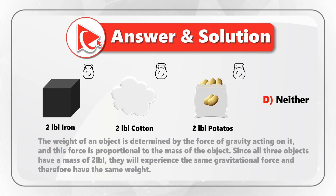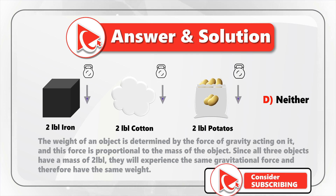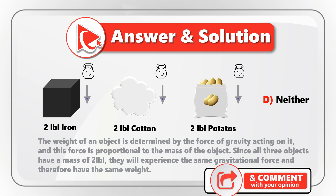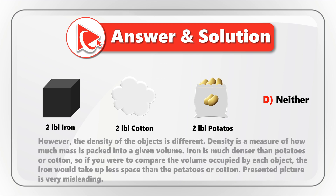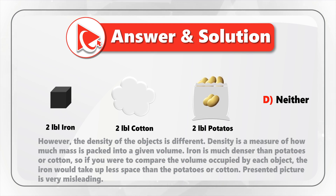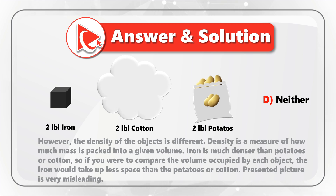The weight of an object is determined by the force of gravity acting on it, and this force is proportional to the mass of the object. Since all three objects have a mass of 2 lb, they will experience the same gravitational force and therefore have the same weight. However, the density of these objects is different. Density is a measure of how much mass is packed into a given volume. Iron is much denser than potatoes or cotton, so iron will take up less space than the potatoes or cotton.